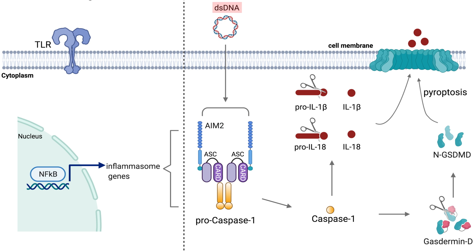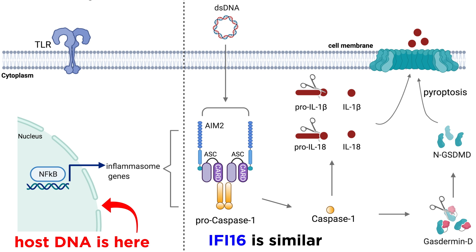AIM2 can be activated by either, as long as it is in the cytosol. Remember that host DNA should be safely contained in the nucleus under normal conditions, meaning that it will be shielded from activating AIM2. This is similar to a recently discovered inflammasome called IFI16, which also senses double-stranded DNA.